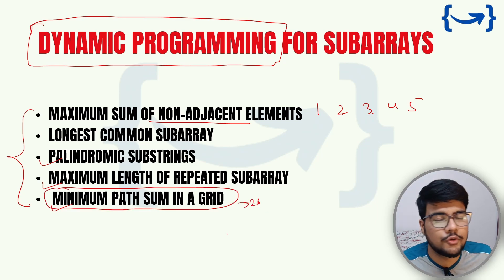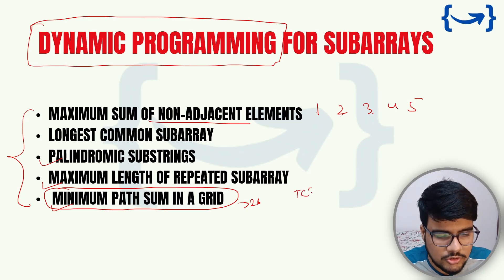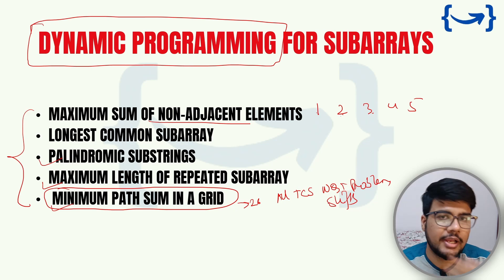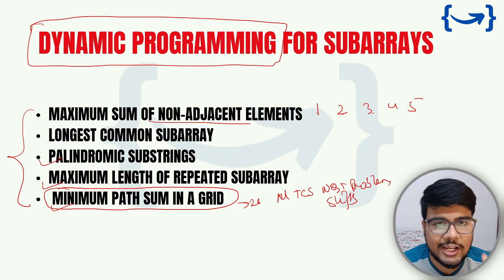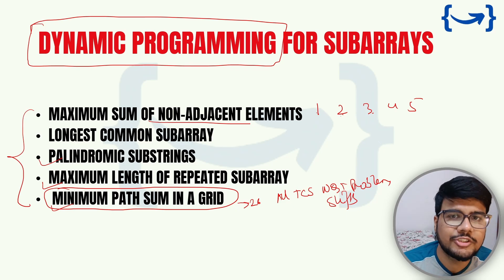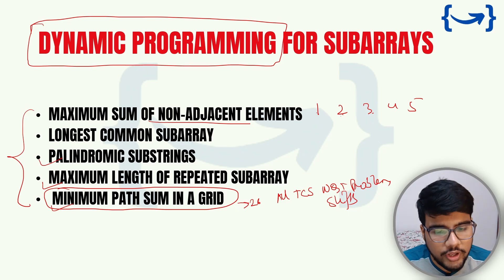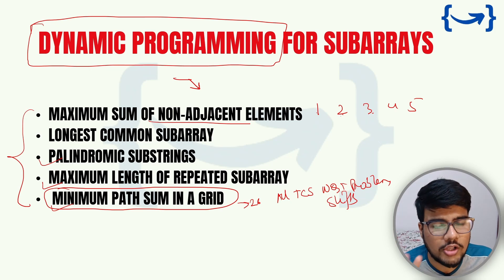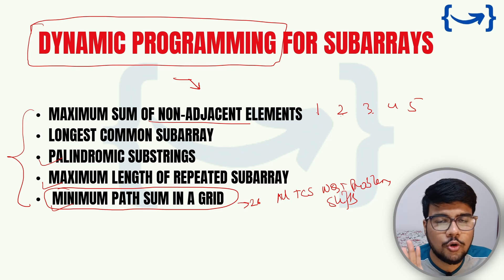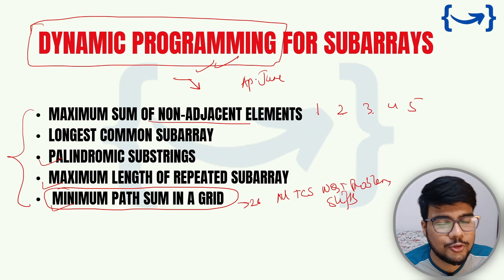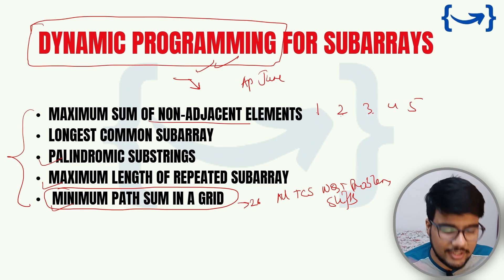Other DP questions include: count all palindromic substrings, maximum length of repeated array, and minimum path sum in a grid. These were also asked in the April shift of TCS NQT. If you check the playlist I created for all TCS NQT shifts, the very first video contains minimum path sum in a grid. You need to be very thorough with DP programs. If you're unlucky, you'll get DP for sure — TCS conducts many OAs, and at least one shift will have DP. If you're lucky you won't, but if not, expect a DP problem in your exam.